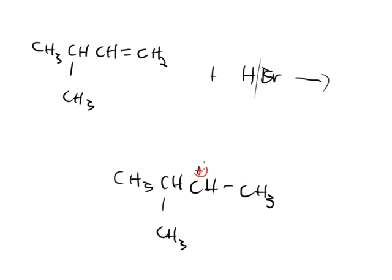A carbocation forms at that position. In the past we've just slapped bromine on it and moved on, but now we're going to look at this structure and ask: will it move? That is the question you should always ask yourself before proceeding. At this point this carbon is a secondary carbocation — there's one carbon to the left and one to the right. If it moves left, that becomes a tertiary carbocation.